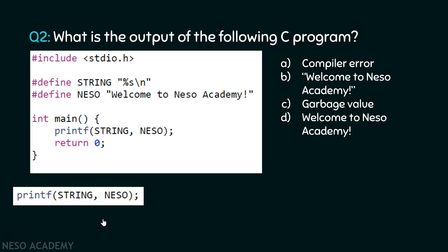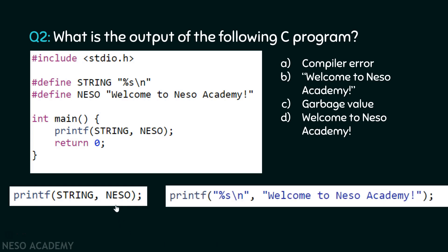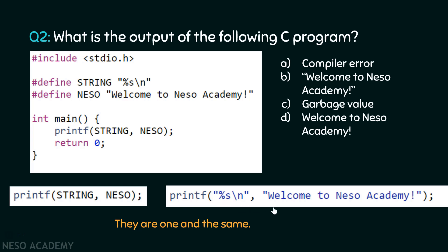Now we know what the job of the preprocessor is — it replaces macros with their corresponding values. Here, instead of numerical values, we have strings. For the first one, this is "%s\n" within double quotes, and for the other it is 'Welcome to Neso Academy!' within double quotes. This is our printf function. The macro is replaced by the string "%s\n", and the other macro is replaced by 'Welcome to Neso Academy!'. So there is no difference between these two printf functions — after replacement of macros, %s is used to print a string on the screen, and here we are providing the string also.